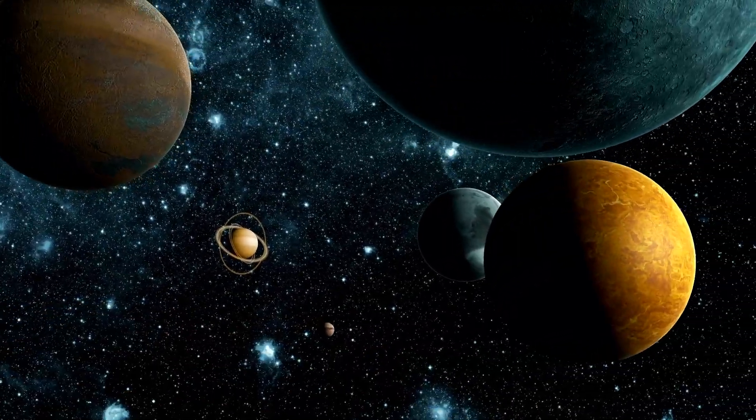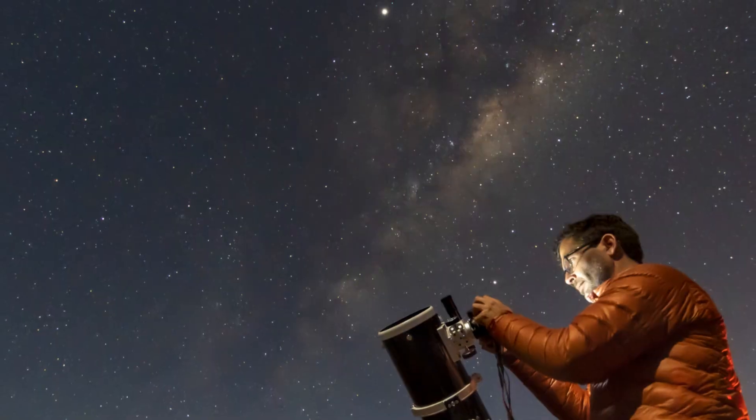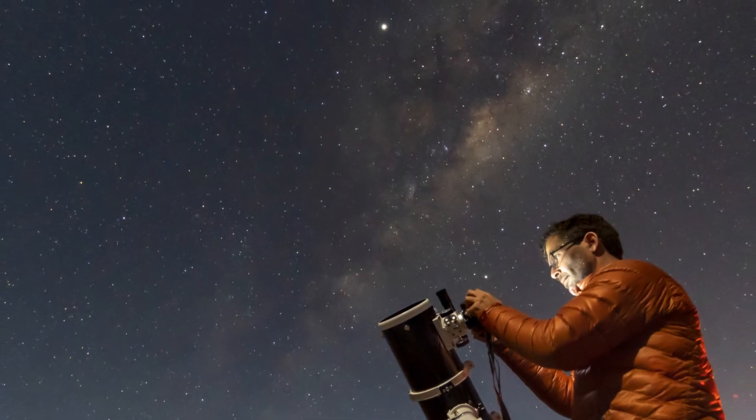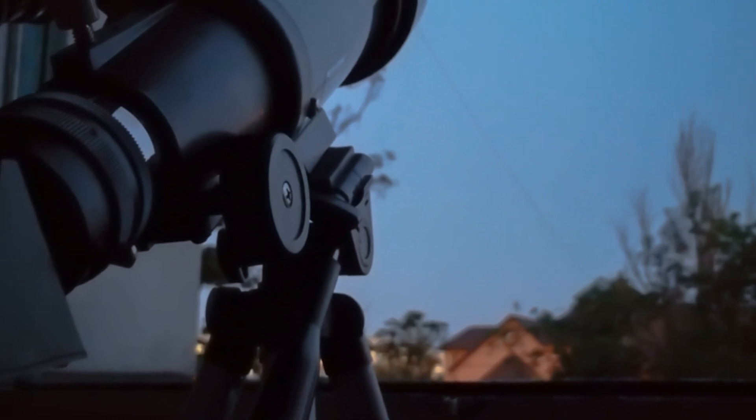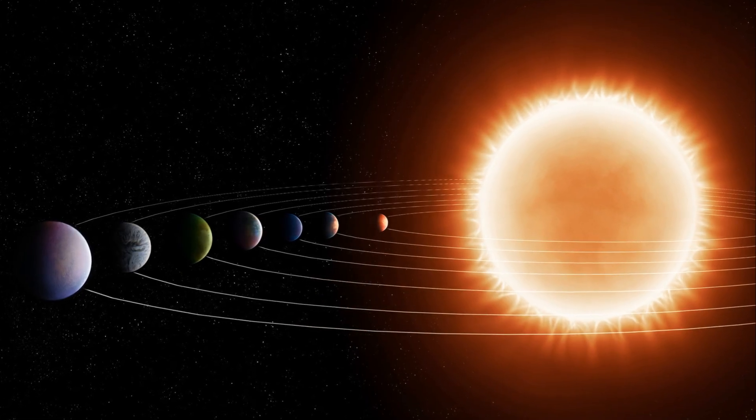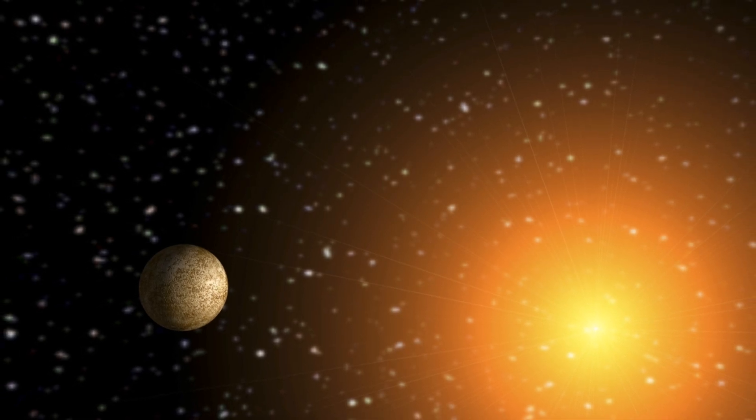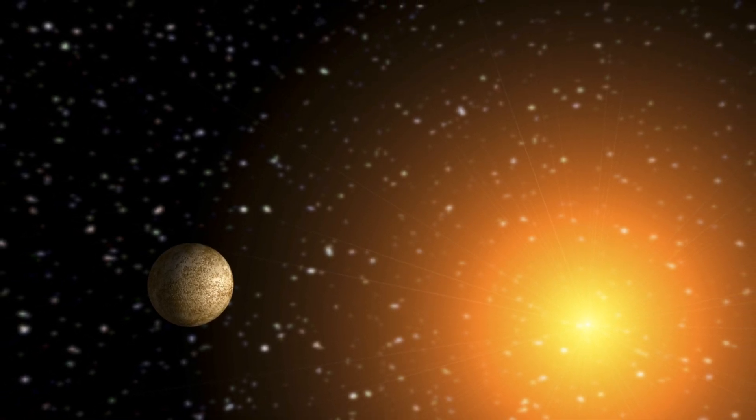Exoplanets are planets that orbit stars outside of our solar system. The first exoplanet was discovered in 1992 and since then astronomers have found thousands more. These discoveries have revolutionised our understanding of planetary systems.